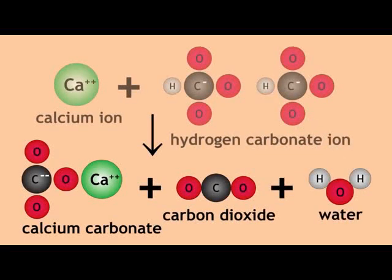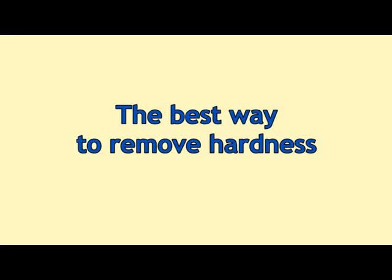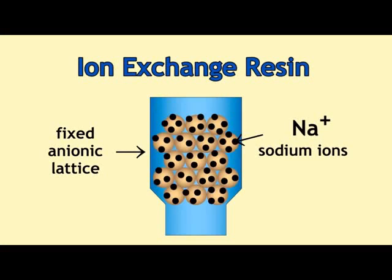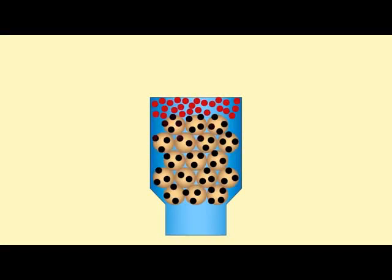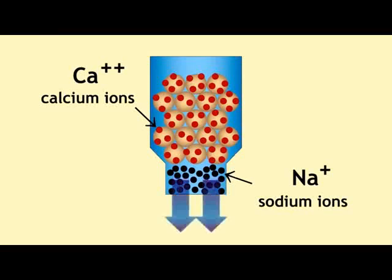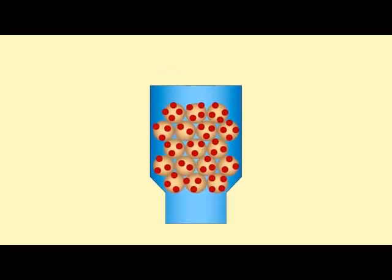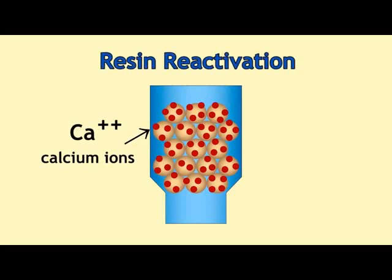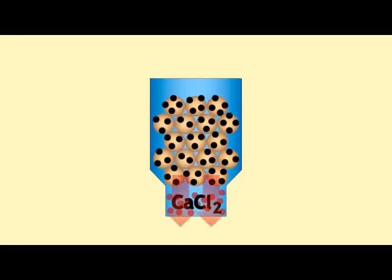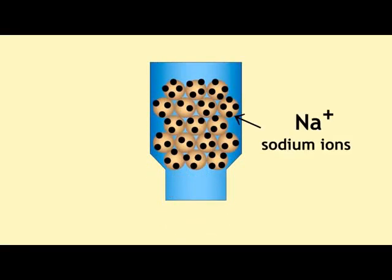The answer is that calcium hydrogen carbonate splits up into calcium carbonate (which is the limescale), carbon dioxide, and water. The best way to remove hardness is to use an ion exchange resin. These have a fixed anionic lattice, initially balanced by positive sodium ions. As hard water flows through, the calcium ions are exchanged for the sodium ions — the calcium sticks to the resin and the sodium ions come out. After a time the resin gets full of calcium ions and must be reactivated by pouring in concentrated sodium chloride solution, which reverses the reaction — the calcium chloride comes out and the resin is again full of sodium ions and ready for use.